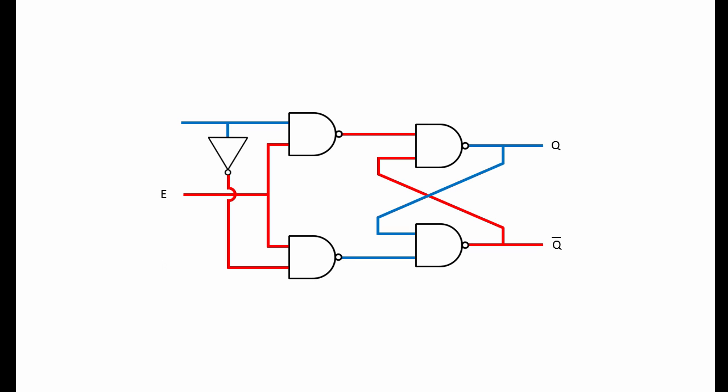Now we can rename input S to D, D for data. And now we have a 1 input gated SR latch, otherwise known as a D latch. Let's see it in action.